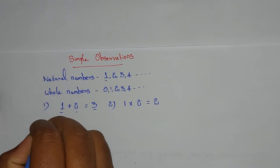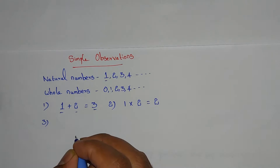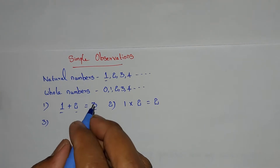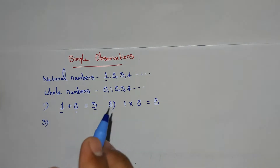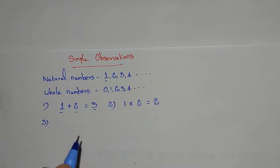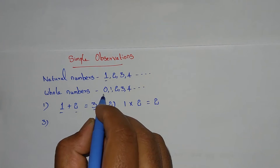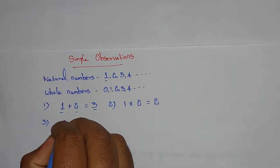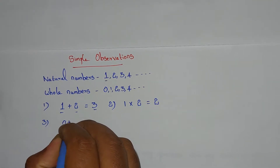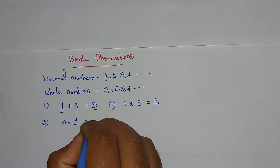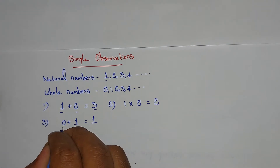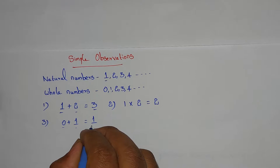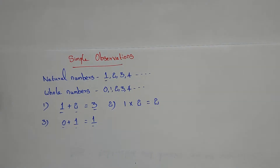Third observation: if we add any two whole numbers, we will get a whole number. For example, 0 plus 1 equals 1. Here 0 is a whole number, 1 is a whole number, and the result 1 is also a whole number.